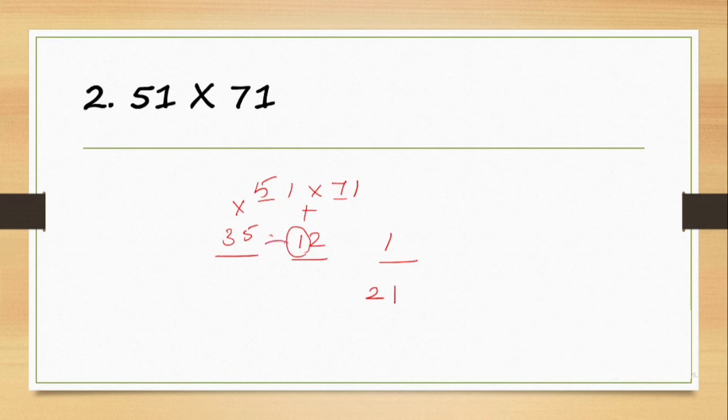Unit digit is 1. Then 5 plus 7 is 12, and 5 times 7 is 35. So 35 plus 1 is 36. The answer is 3621.